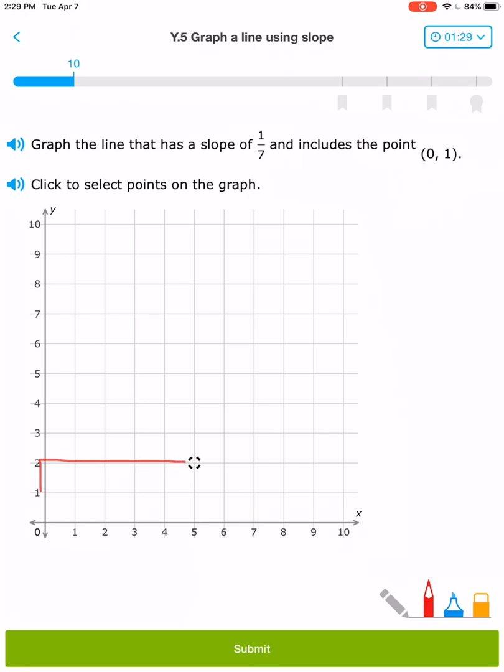1, 2, 3, 4, 5, 6, 7. And that is going to be the correct line. So 1/7, I'm going to go ahead and submit.